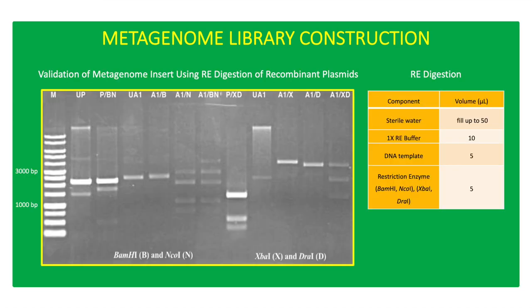Plasmids were extracted from a 24-hour culture of the A1 transformant using a FastGene plasmid mini-kit. Single-cut and double-cut RE digestion were performed using BamHI, EcoRI, XbaI, and DraI restriction enzymes.